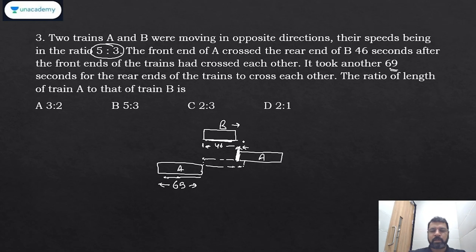So the question is effectively that train A has to cover B's length in 46 seconds, and it covers its own length in 69 seconds. So ultimately, this will be the ratio of the distance, the ratio of the length of the trains. Isn't it?